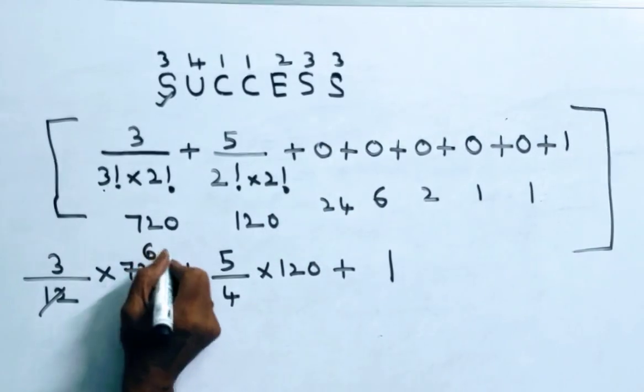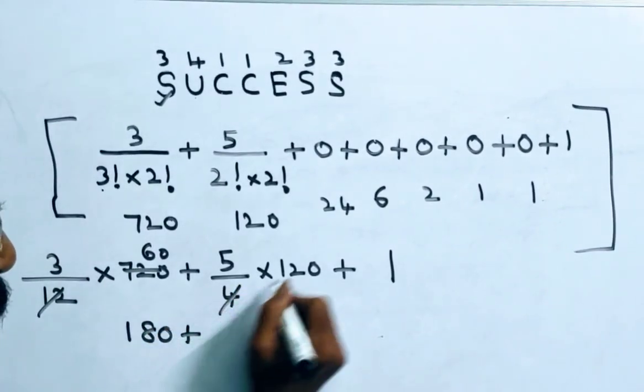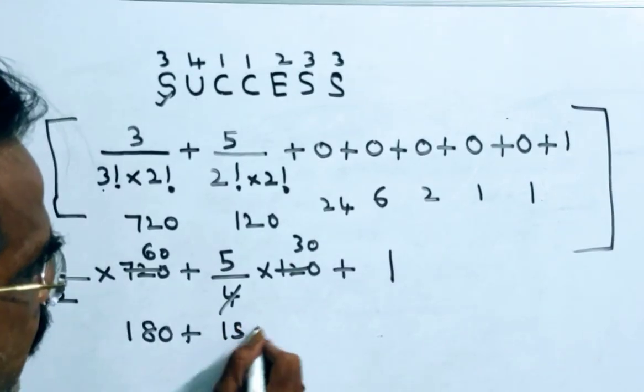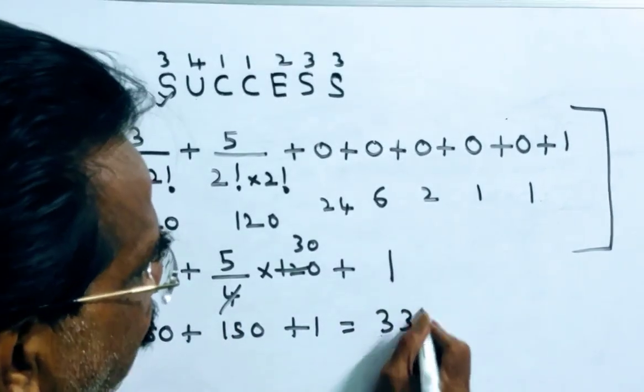So, 12 into 720 is 180, plus 4 into 120 is 150, plus 1, that is equal to 331.